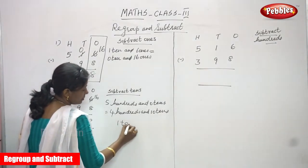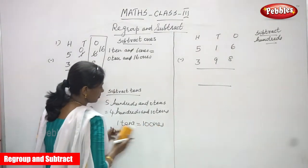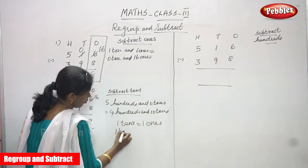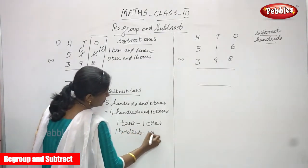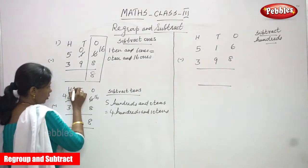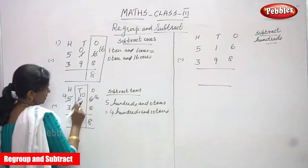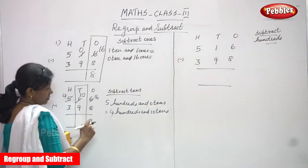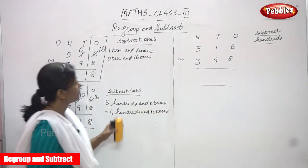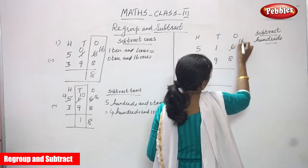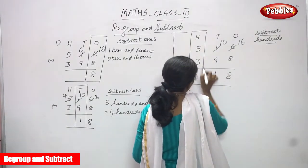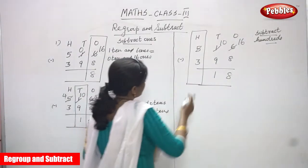One hundred equals ten tens — that is what we are applying. So the zero becomes ten. Now concentrating only on the tens place: ten minus nine. Counting backward from ten, the answer is one. Ten minus nine equals one. Now we have the ones place answer, the tens place answer, and next we focus on the hundreds place.